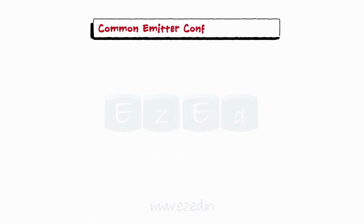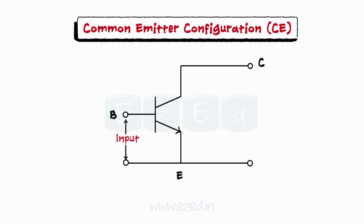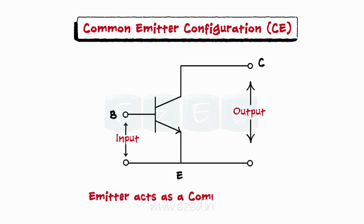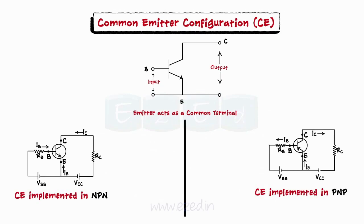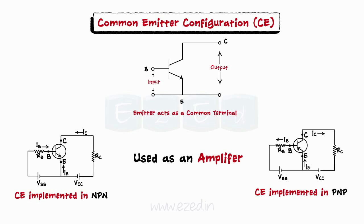In the CE configuration, the input is applied at the base-to-emitter junction and the output is obtained at the collector-to-emitter junction. That is, the emitter acts as a common terminal between the input and the output. The transistor is normally used as an amplifier in the CE configuration.